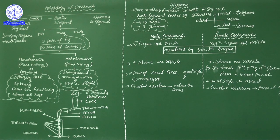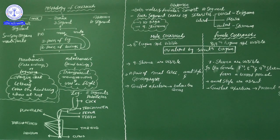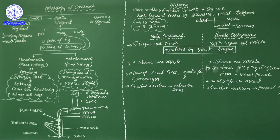Now let me start today's content: the thorax. The thorax of the cockroach is made up of three segments. Those three segment names we discussed in the last video — in short: pro, meso, and meta. The first thorax part is called the prothorax, then mesothorax and metathorax. These three segments form the thorax of the cockroach.